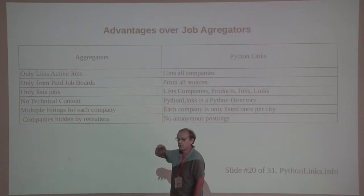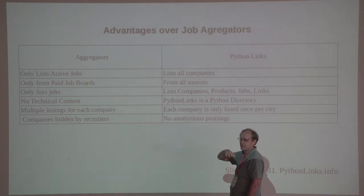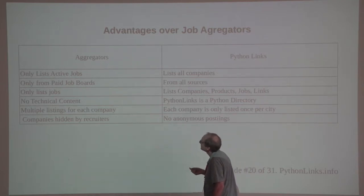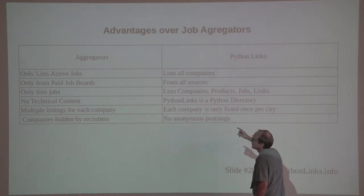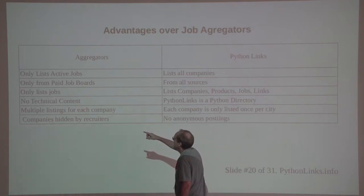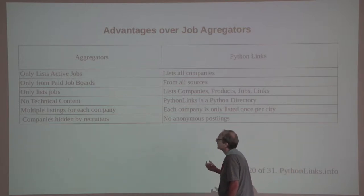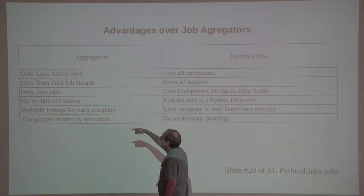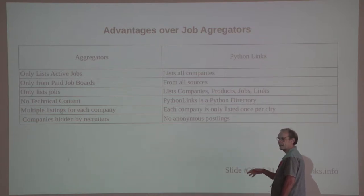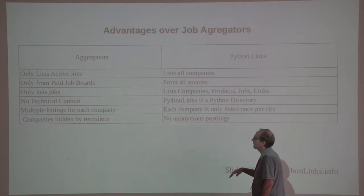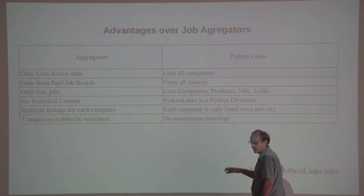Job aggregators will only take from paid job boards to reduce spam, but because this is all curated, I'm happy to take from anywhere. They only list jobs, whereas this lists companies, products, jobs, and links. They have no technical content, whereas Python Links was first and foremost a Python directory and taxonomy — it's all part of the same tree. They allow multiple listings for each company, which isn't ideal — you really want to see a list of companies, and only when you click into a company can you see the list of jobs. Here there are no anonymous postings — you can see who the companies are.